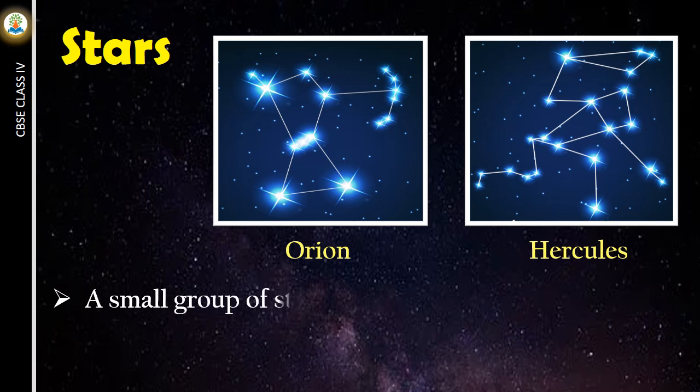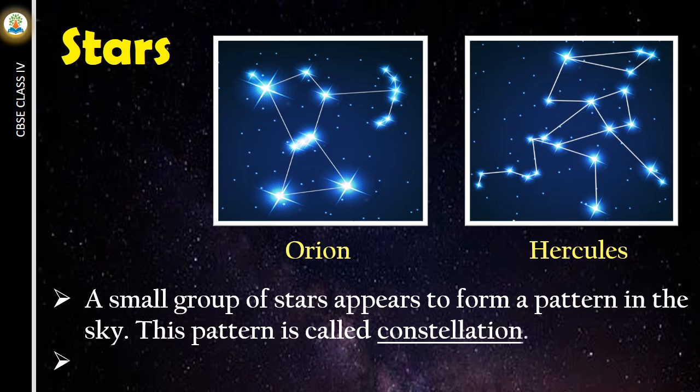A small group of stars appears to form a pattern in the sky. This pattern is called constellation. There are 88 constellations in the universe.